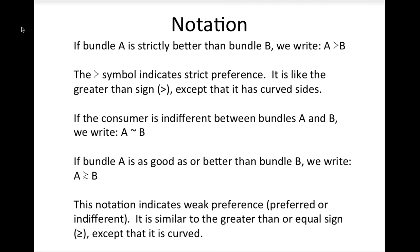Economists make two more assumptions about preferences. First, we assume that every bundle is at least as good as itself — when preferences satisfy this, we say they are reflexive. The second assumption is about consistency: if a consumer prefers bundle A to bundle B, and bundle B to bundle C, then it must be the case that the consumer prefers bundle A to bundle C. We call this property transitivity. Note that while this seems reasonable, violations of transitivity are not uncommon in data about actual consumer choices.